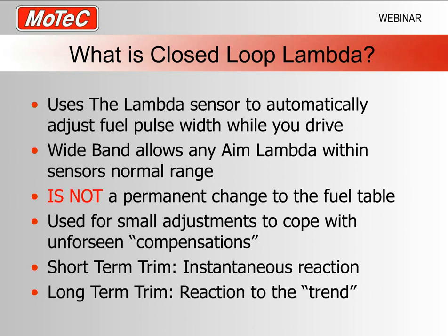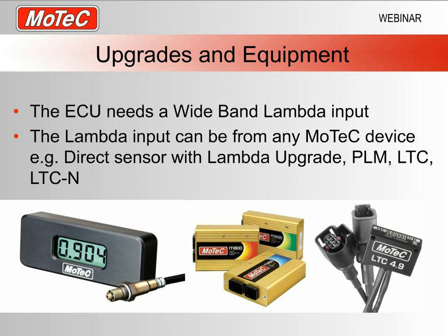For upgrades and equipment, the ECU just needs a wideband lambda input. The function is standard on our current model ECUs. You can get your lambda signal from any of our lambda devices or with a direct sensor wired straight to the ECU. If it's wired straight to the ECU, you need the lambda upgrade for that ECU. If you have a PLM, LTC, or the new LTCN, you don't need the ECU upgrade — the function is part of the standard software package.